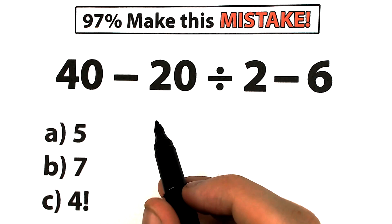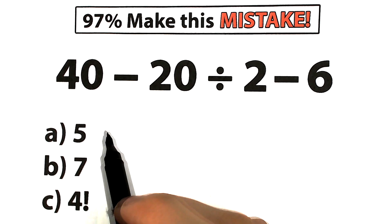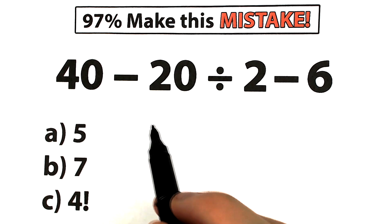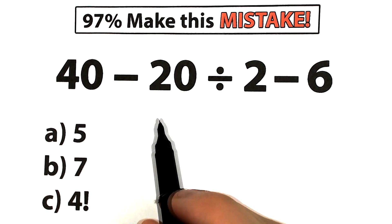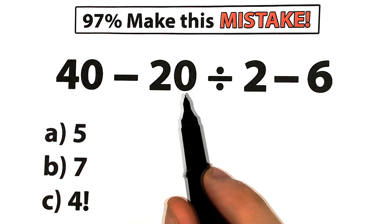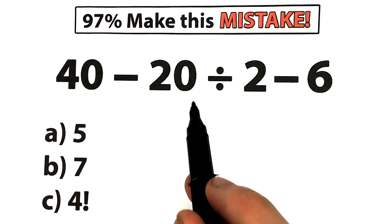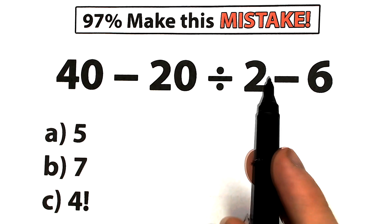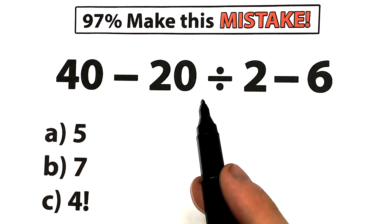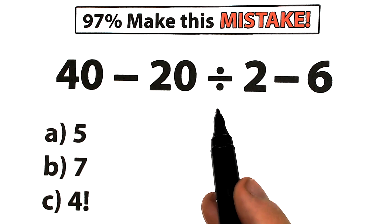Hello everyone, welcome back to my channel Mathematics, a channel with really interesting questions every day. Today we have a really interesting challenge. We have 40 minus 20 divided by 2 and minus 6. This looks like a pretty easy problem, but many of you are going to get this wrong and you'll probably be a little bit shocked.